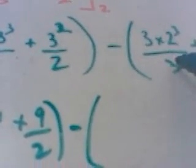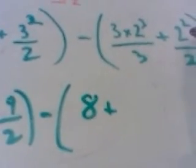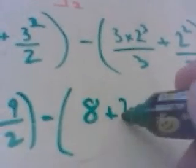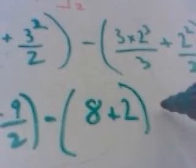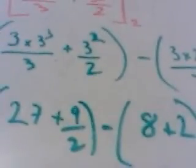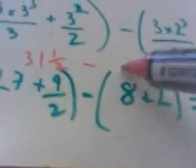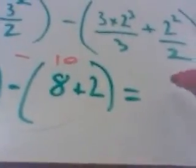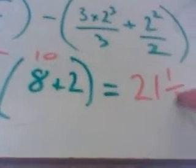Subtract—3 divided by 3 is 1 again, so that's just 8 plus 2 squared is 4 divided by 2 is 2, so that's 10 there. So we're going to take 10 from our answer. Now 9 over 2 is 4 and a half, so that's 31 and a half, take away 10 gives me an answer of 21 and a half.